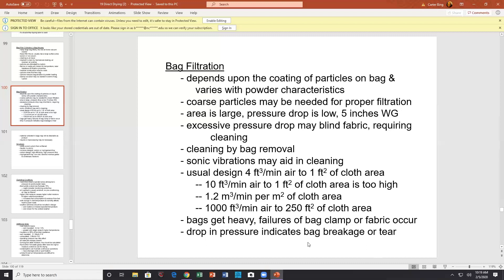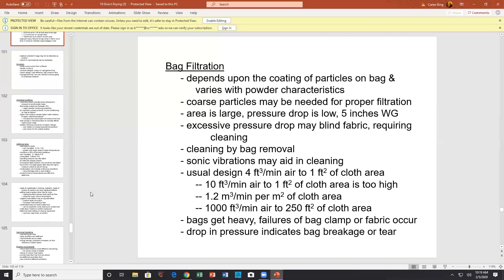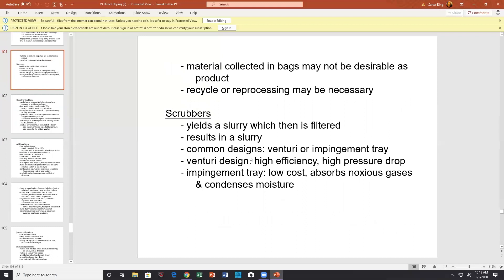The usual designs given four cubic feet per minute. One foot square cloth area. Do you have this information for your bags? Bags are heavy, get heavy failures. Bag clamps is often the case. Fabric, also a failure of the fabric. I mean, your bag house may be 50 years old and the fabric has rotted. But, hopefully you're not in that situation. 50 year old bag houses. Drop in pressure indicates breakage, so you monitor the pressure. You also have such devices as the tribal flow particle detector. It's kind of cool. Material collecting bags may not be desirable as a product. Recycle reprocessing may be necessary though. Wet scrubbers. It's a slurry that then has to be filtered. Common designs venturi impingement plate. High efficiency, high pressure drop. Low cost, absorbs obnoxious and condenses. Moisture.